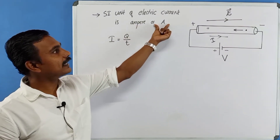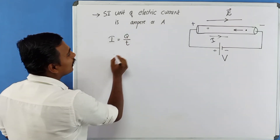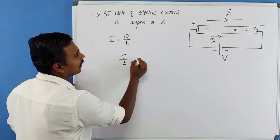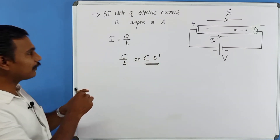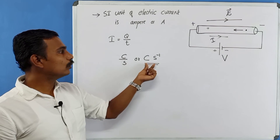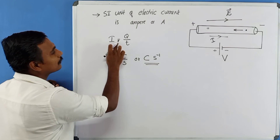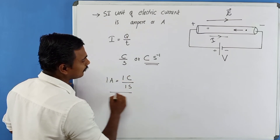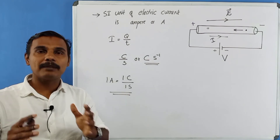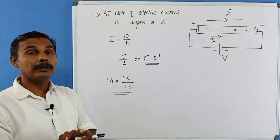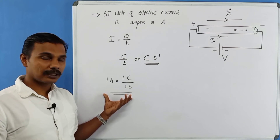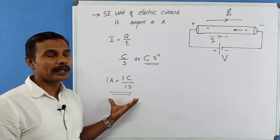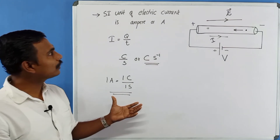One Ampere is equal to 1 coulomb per 1 second — that is, 1A = 1C/1s. This relates to the Magnetic Effect of Electric Current chapter. So the SI unit of electric current is Ampere.